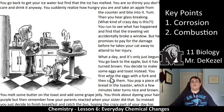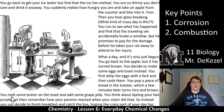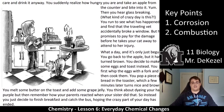You decide to make some eggs and toast instead. You first whip the eggs — it's still eggs, just different in appearance, so whipping is a physical change; circle that. Cooking them would be a chemical change; underline that — you're turning them into something different. You pop a piece of bread into the toaster — chemical change — and a few minutes later it turns nice and brown. You melt some butter on the toast — melting butter is a physical change because it's still butter, just melted; circle that. You think about dyeing your hair purple — that would be a physical change; it's still hair, just a different color. Instead, you finish breakfast and catch the bus, hoping the crazy part of your day has ended.